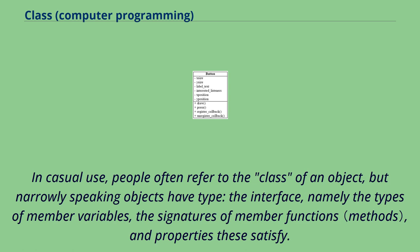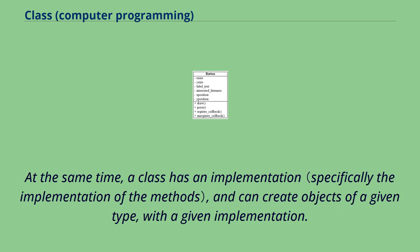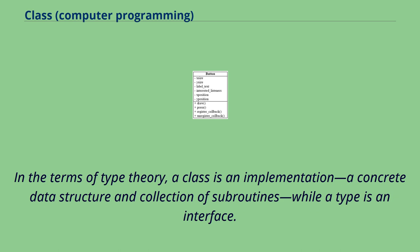In casual use, people often refer to the class of an object, but narrowly speaking objects have type — the interface — namely the types of member variables, the signatures of member functions, and properties these satisfy. A class has an implementation and can create objects of a given type with a given implementation. In the terms of type theory, a class is an implementation — a concrete data structure and collection of subroutines — while a type is an interface.